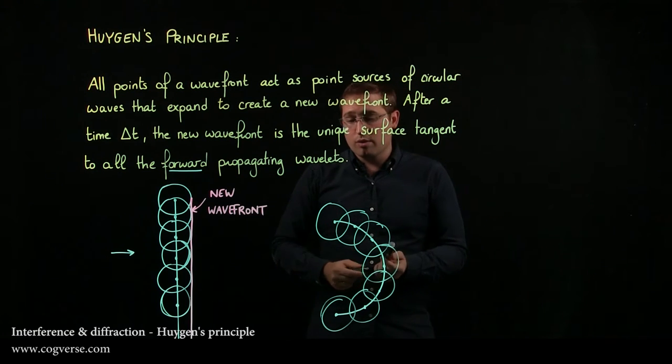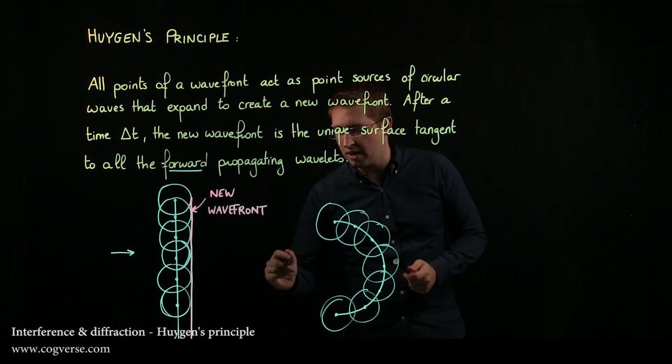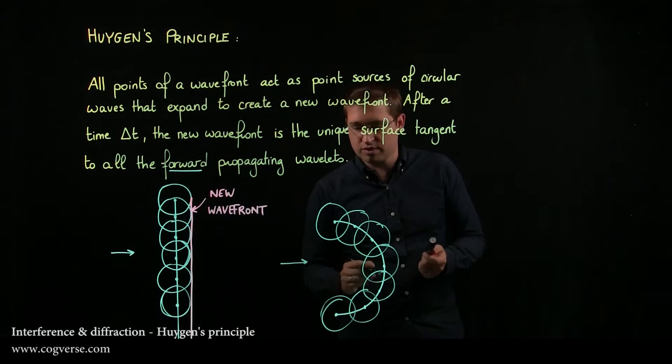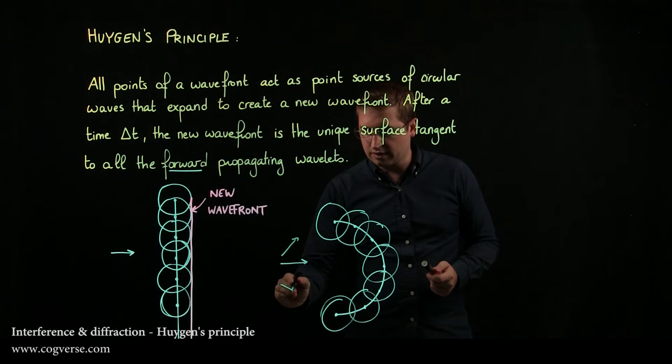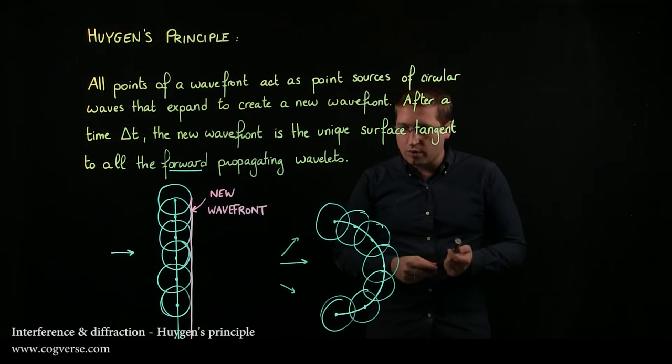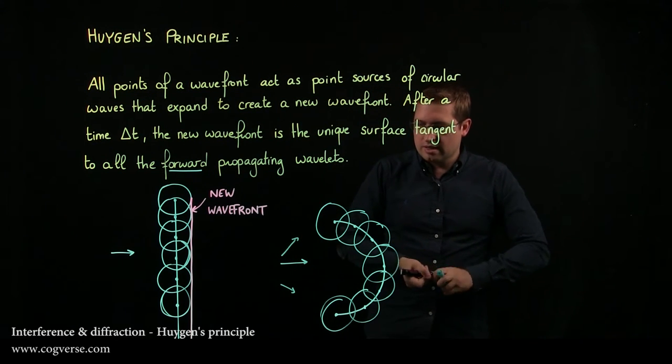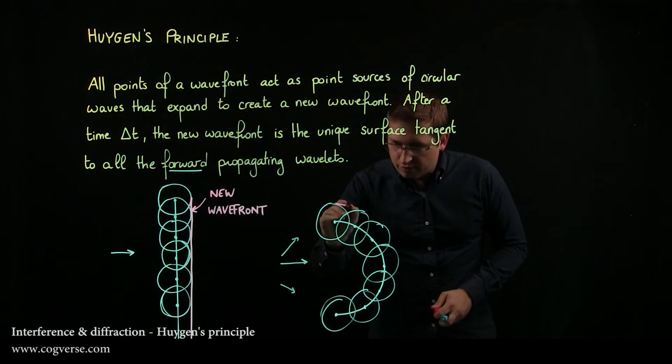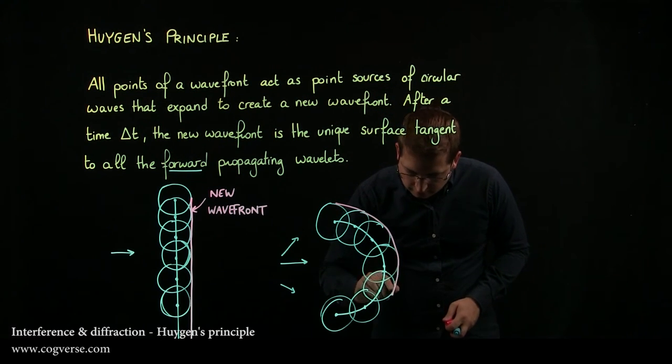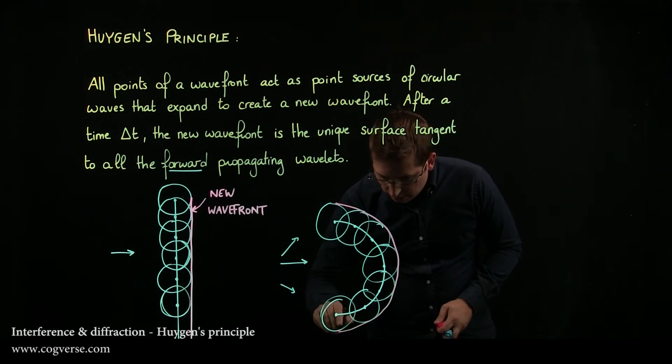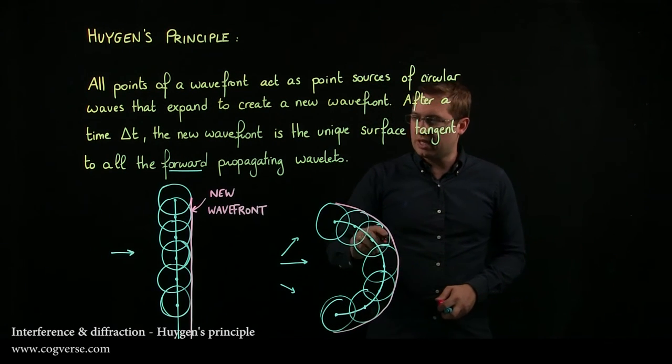We take the forward propagating wavelets. Let's say the wave was going this way, while really expanding in every way like this because it's a spherical wave or a circular wave, and really my new wavefront is going to be this. It is the surface that is tangent here like this, and albeit somewhat imperfect, you get the idea.